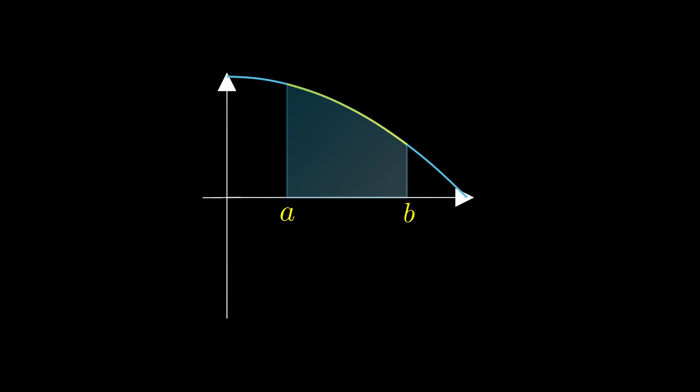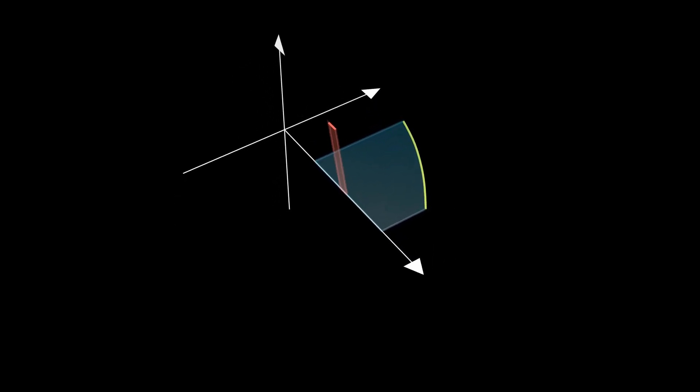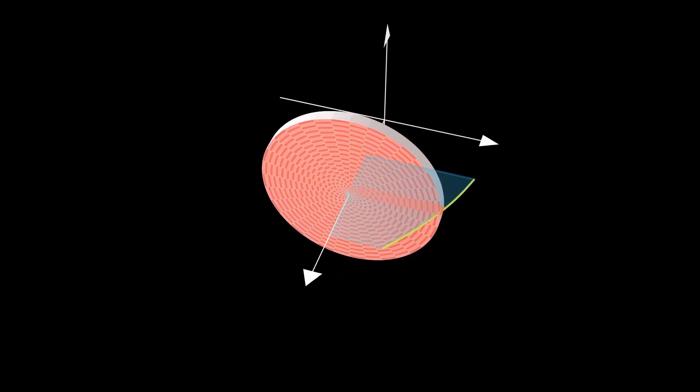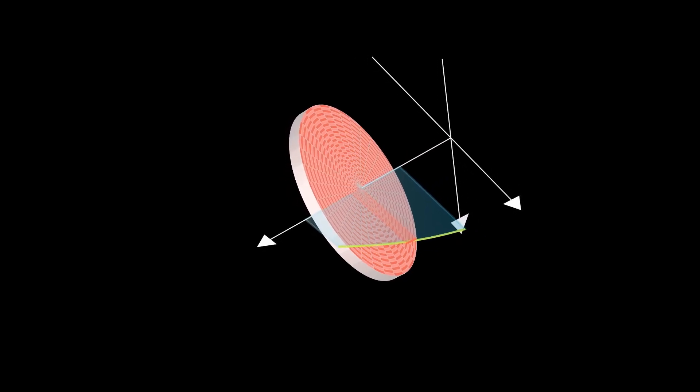Let's take the i-th approximating rectangle with a height of f of x sub i and with width delta x. If we rotate this rectangle about the x-axis, we will generate the disk. Now a disk is basically a short cylinder, so to find the volume of this disk, we look to the formula of the volume of a cylinder.